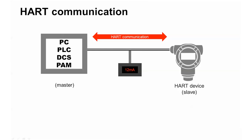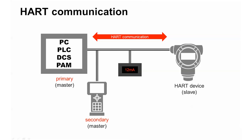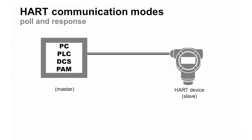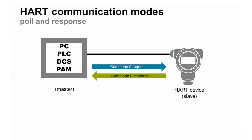HART is a master-slave protocol, which means that a field device — the slave — only provides data when it is requested by the host system, the master. The HART protocol supports two masters: a primary and secondary. This allows secondary masters such as handheld communicators to be used without disrupting communications with the primary master, the host system. A typical installation is poll-response: the host requests a specific HART command and the device responds with the information.